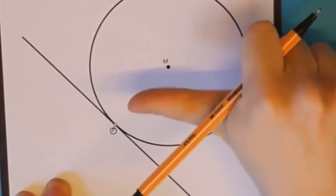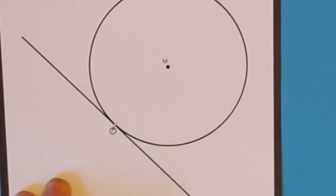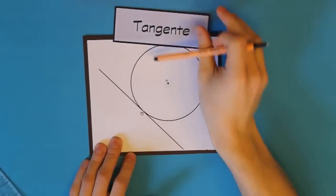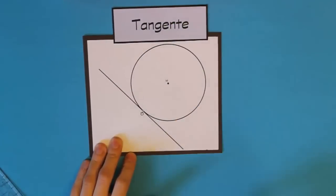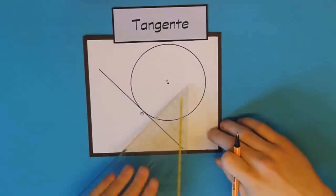Das heißt, sie liegt quasi an diesem Kreis nur an. Sie schneidet ihn aber nicht. Eine Gerade, die den Kreis in genau einem Punkt berührt, nennt man eine Tangente. Und der Begriff Tangente kommt aus dem Latein und heißt so viel wie berühren.